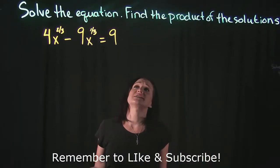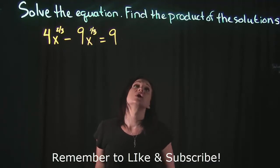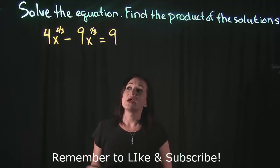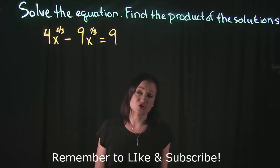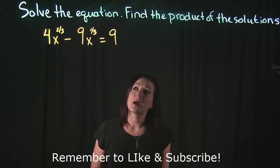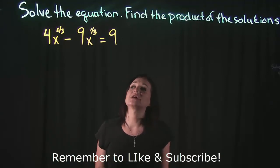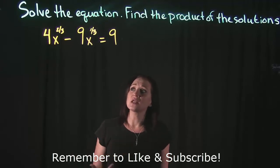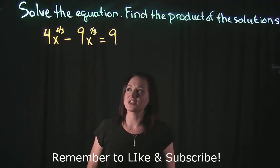For this video, the question is asking us to solve the equation and then find the product of the solutions. So that's going to imply that we're going to have more than one solution to this problem. Now if we're taking a look at this equation, it says that we have 4x to the 2/3 minus 9x to the 1/3 is equal to 9. Now we need to solve this equation for x, and I'm noticing the exponents on x are fractions.